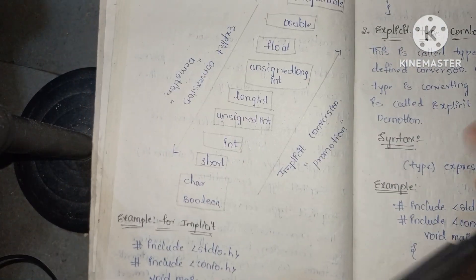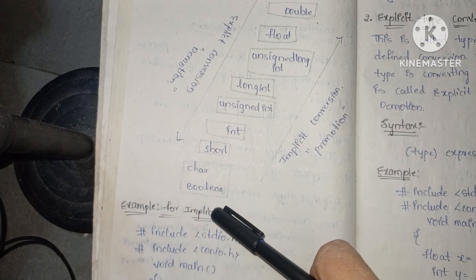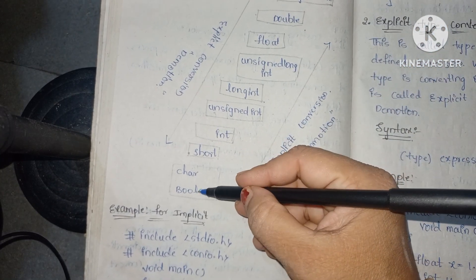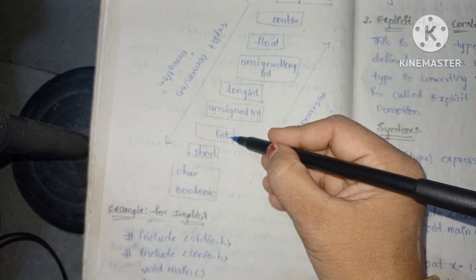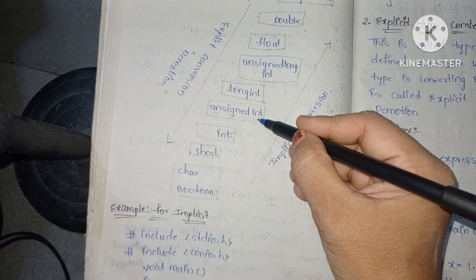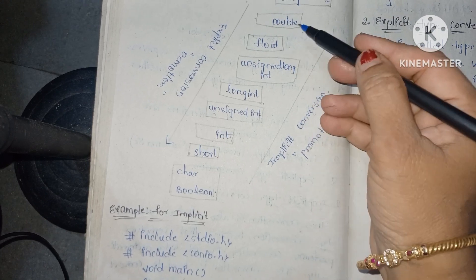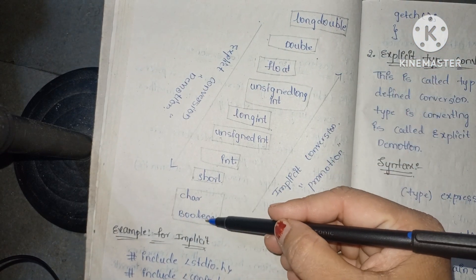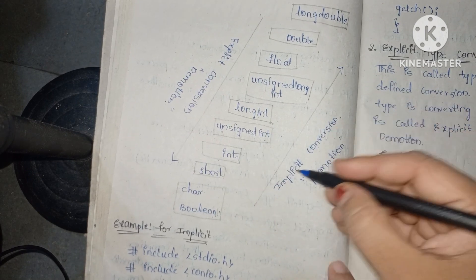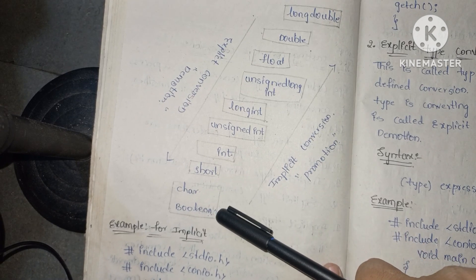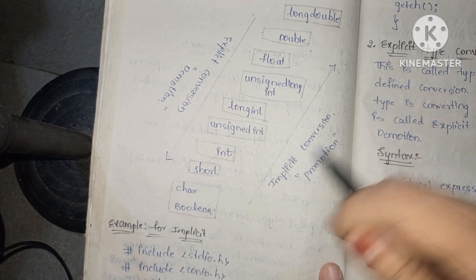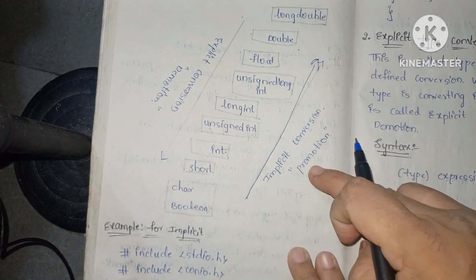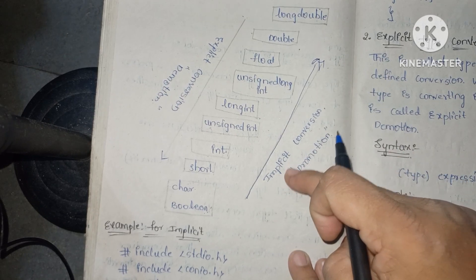Looking at the diagram of different data types from smallest to largest: boolean and character both occupy one byte, then short, then int, then unsigned int, long int, unsigned long int, then float, double, and long double. Whenever the smallest data type — boolean or character — is converted into short, integer, or up to long double following this flow, that is called promotion, which is implicit conversion done by the compiler. The user does nothing; the compiler automatically converts the smaller data type into the larger data type.